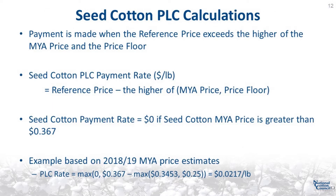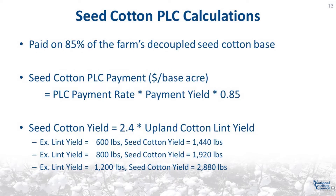I'll now discuss the details of the seed cotton PLC payment calculation. The PLC payment is made when the effective reference price exceeds the higher of the marketing year average price and the price floor. If the seed cotton marketing year average price is greater than 36.7 cents per pound, the seed cotton PLC payment rate is equal to zero. For the 2018-19 marketing year, the seed cotton PLC payment rate is estimated to be 2.17 cents per pound. The seed cotton PLC payment rate is applied to 85% of the farm's decoupled seed cotton base. The seed cotton PLC payment yield is equal to 2.4 times the upland cotton lint yield. For example, if the lint yield is 600 pounds per acre, the seed cotton payment yield is 1,440 pounds; if 800 pounds per acre, the payment yield is 1,920 pounds; and if 1,200 pounds per acre, the payment yield is 2,880 pounds per acre.